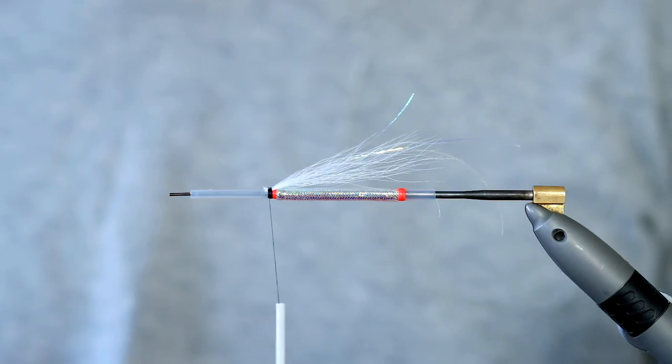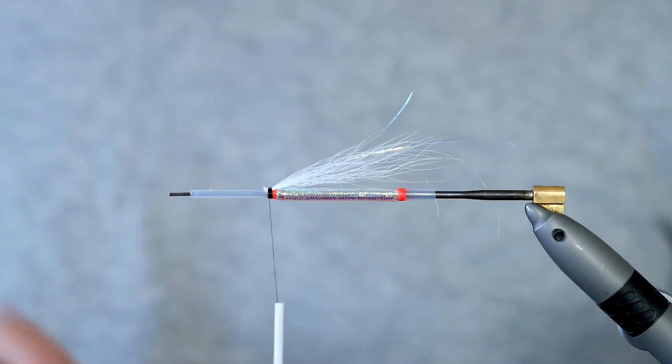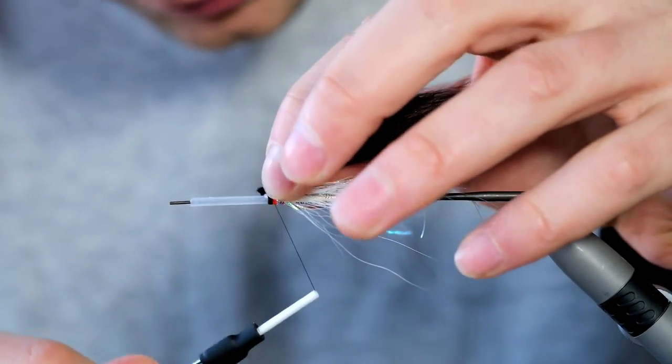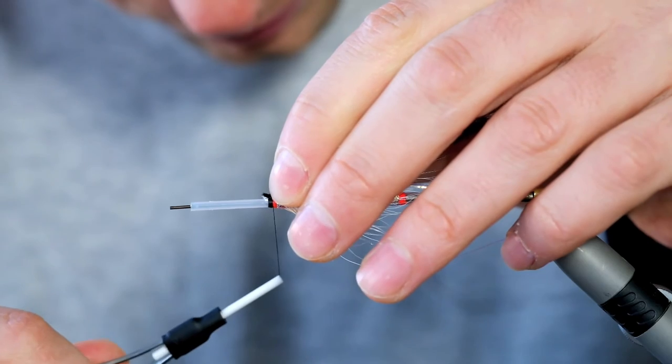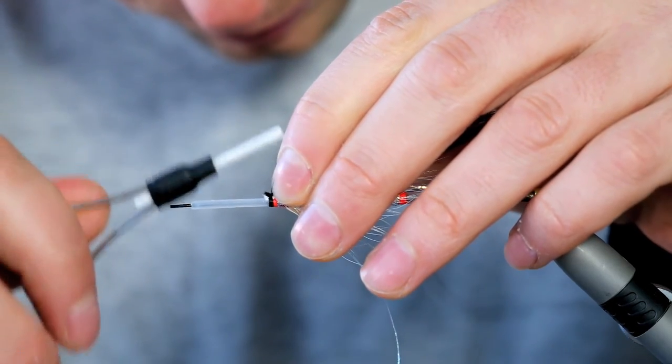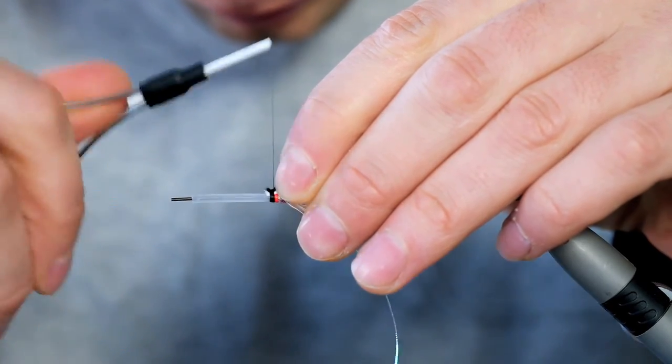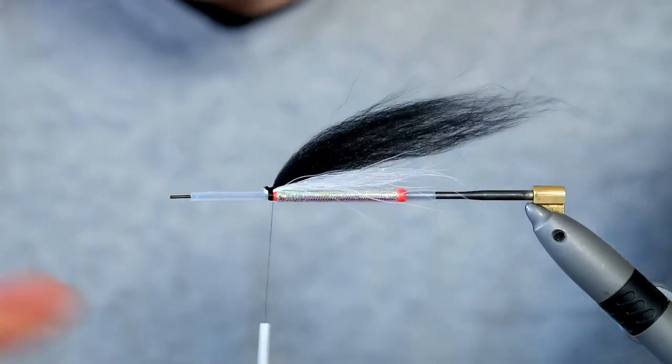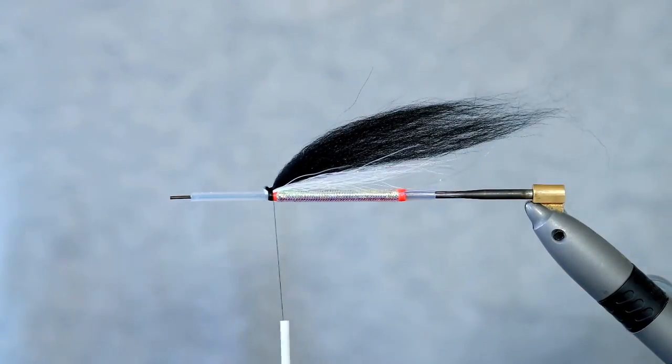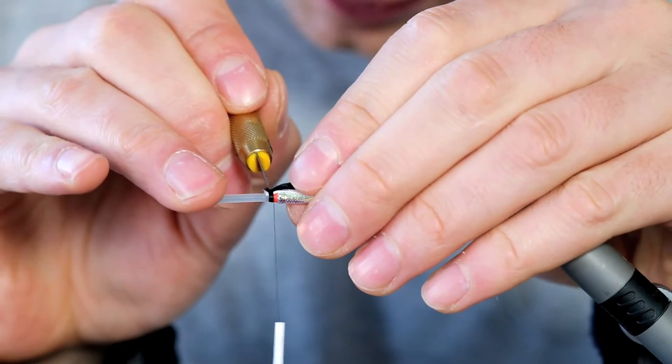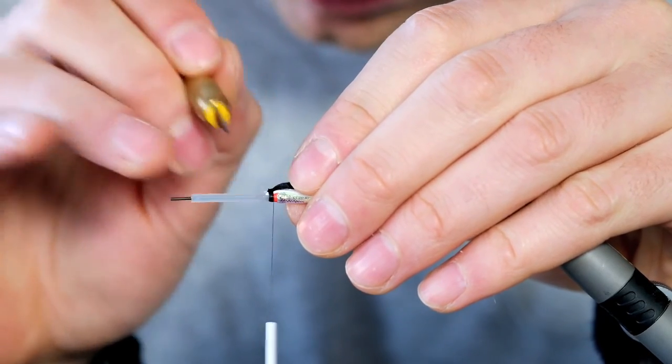Now it's time for the wing and for this I like to use the softest hair I can find and I like to use Temple Dog. So once you selected your Temple Dog, tie it in. There we go and if you have some excess left over in the front, again a little hobby knife works great.